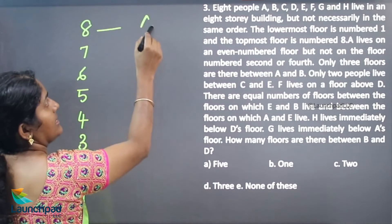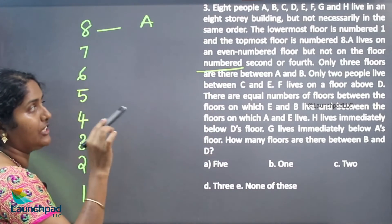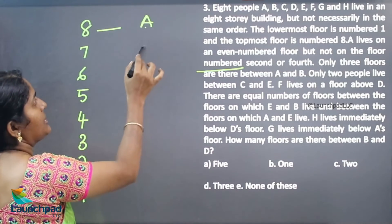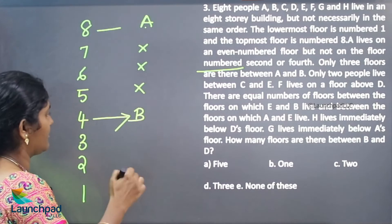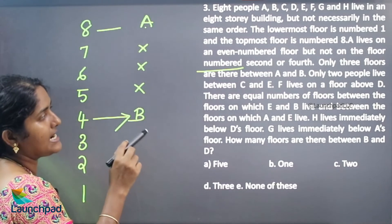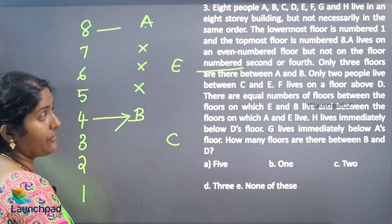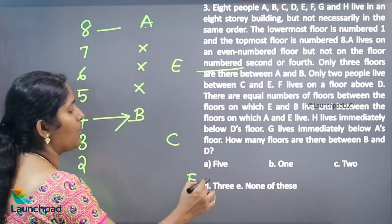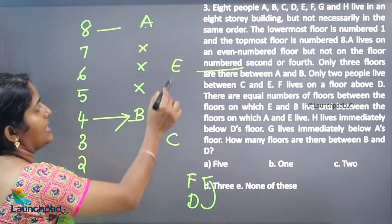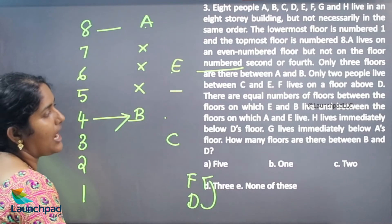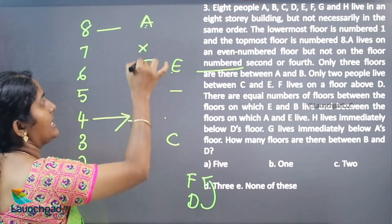So 8th floor: if I am placing A here — A lives on an even numbered floor but not 2nd or 4th. Only 3 floors are between A and B, so B goes to the 4th place. Only 2 people live between C and E, so if I place C here, E will be here. F lives on the floor above D. There are equal floors between E and B and between A and E — one floor each. So E placed here means only 1 person between E and B, and similarly A and E have only 1 person between them. Therefore C will be coming here and F will be coming here, D will be coming here.